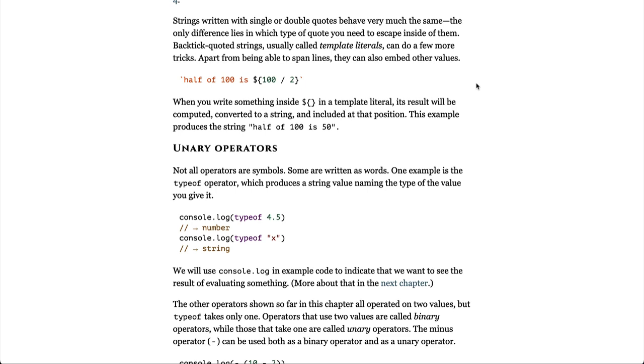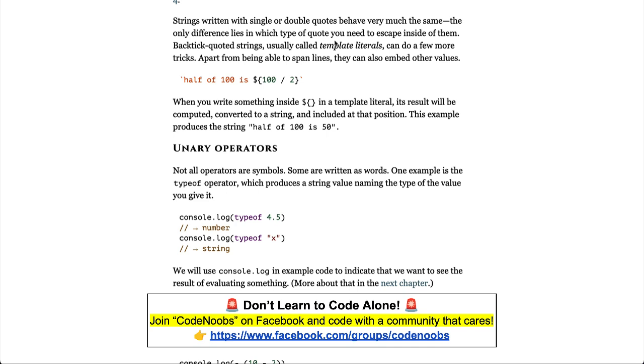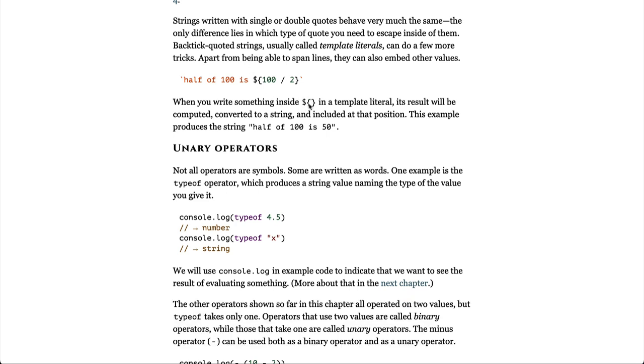Strings written with single or double quotes behave very much the same. The only difference lies in which type of quote you need to escape inside of them. Back-tick quoted strings, usually called template literals, can do a few more tricks. Apart from being able to span lines, they can also embed other values. When you write something inside of dollar sign curly brackets in a template literal, its result will be computed, converted to a string, and included in that position. This example produces the string half of 100 is 50.